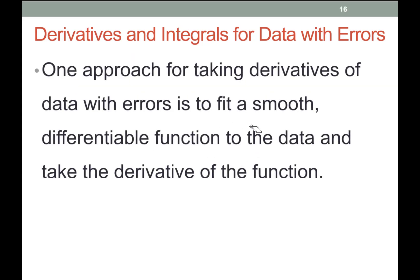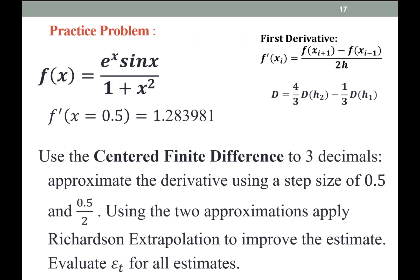This slide is basically reinforcing what was just said about curve fitting and then finding the derivative — that's what you have to do. As a practice problem, we have the same function from the previous lecture. Find the derivative at x = 0.5; the true value is 1.283981. Use a centered finite difference to three decimal places, approximate using h = 0.5 and h = 0.25, apply Richardson extrapolation to improve the estimate, and evaluate the true percent relative error.